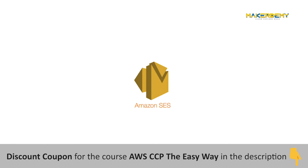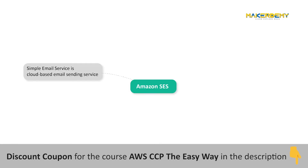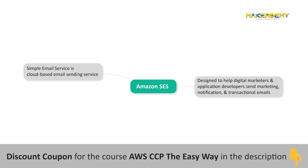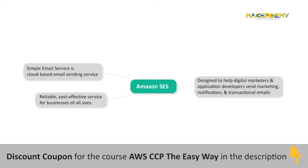Amazon SES. Amazon Simple Email Service, or Amazon SES, is a cloud-based email sending service designed to help digital marketers and application developers send marketing, notification, and transactional emails. It is a reliable, cost-effective service for businesses of all sizes that use email to keep in contact with their customers.